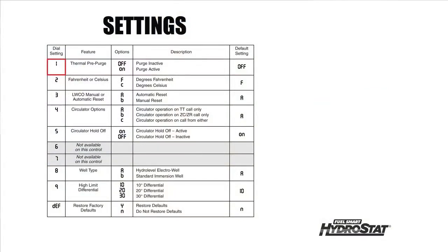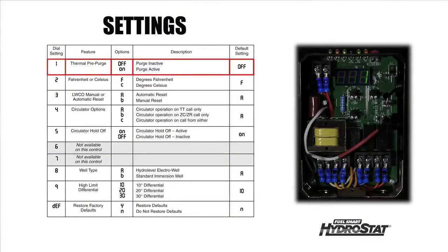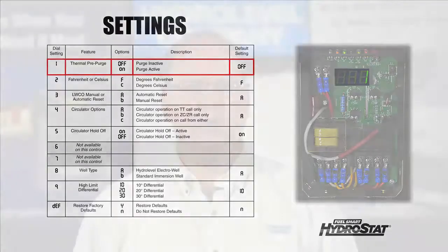Option number one is Smart Thermal Pre-Purge. This is a fuel saving feature that purges latent heat out of the boiler in an attempt to satisfy a heat call before the control allows the burner to fire.